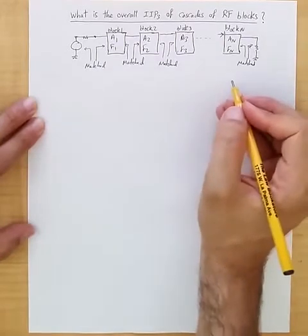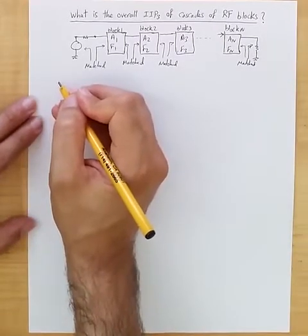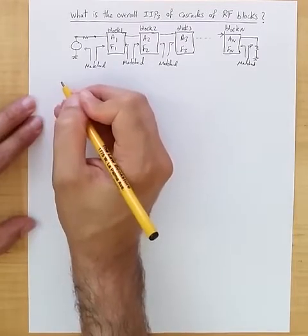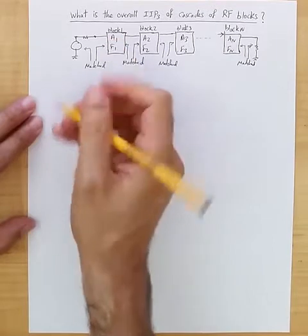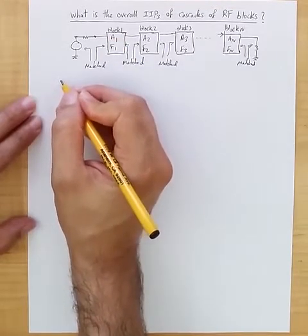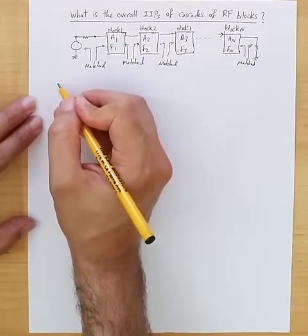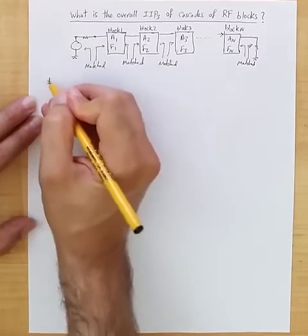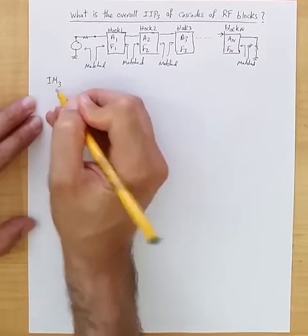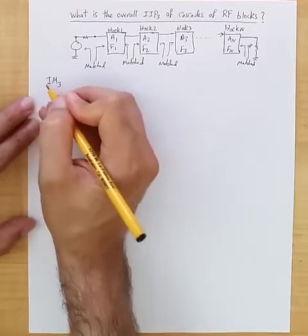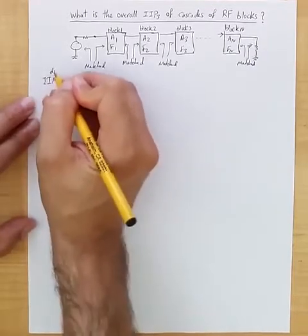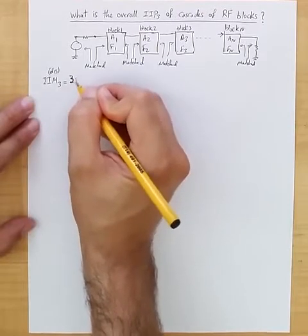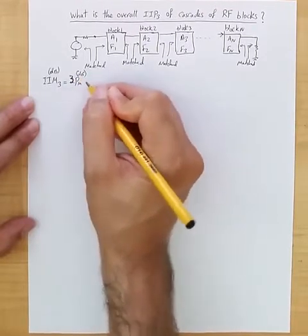We want to compute the overall IIP3. We know that for each of the blocks, let's say for block one, the relationship between IIP3 and IM3 and the input power—the intermodulation product of third order, let's say input referred—is equal to, in dB, three times the input power in dB minus two times the input referred intercept point of third order in dB.